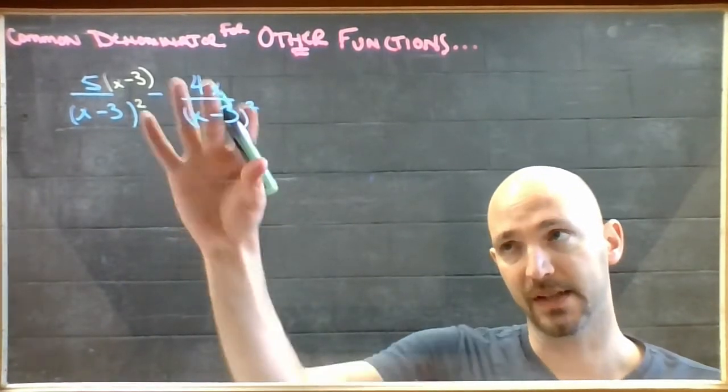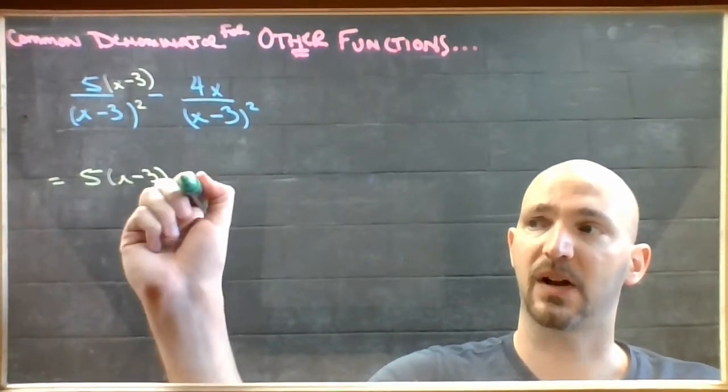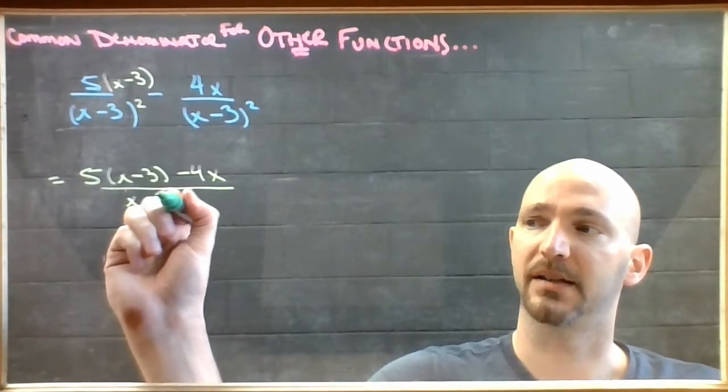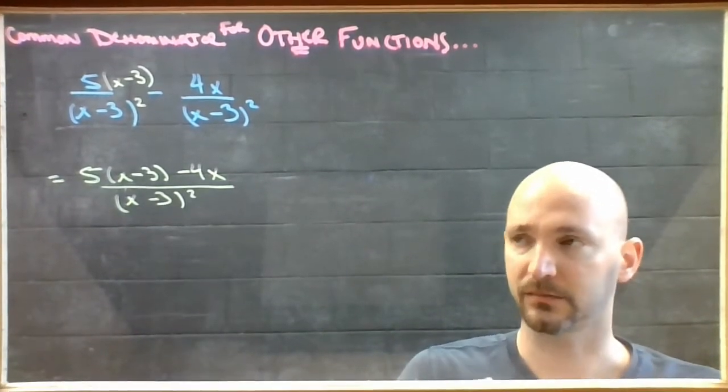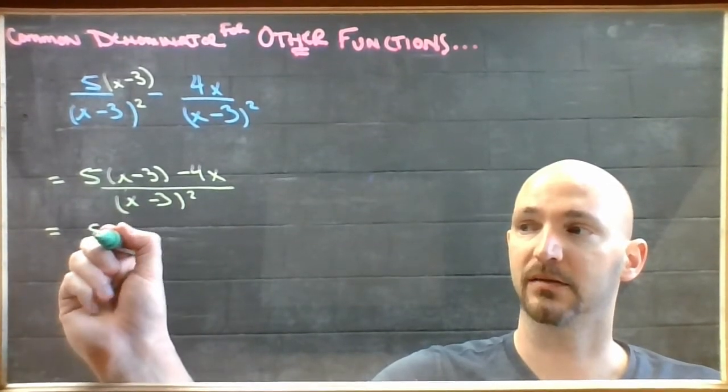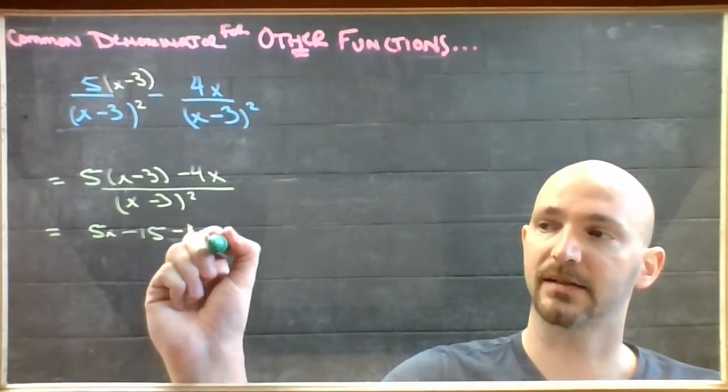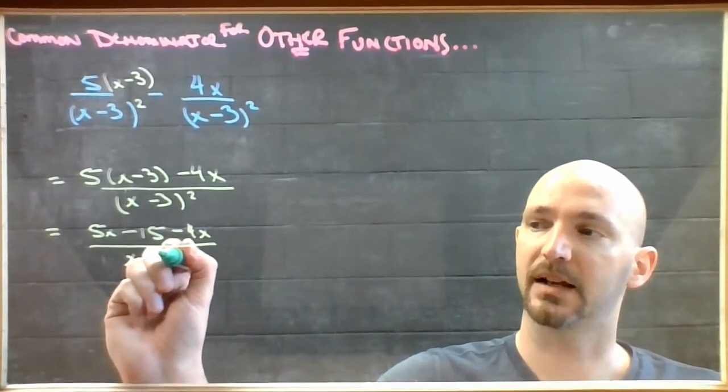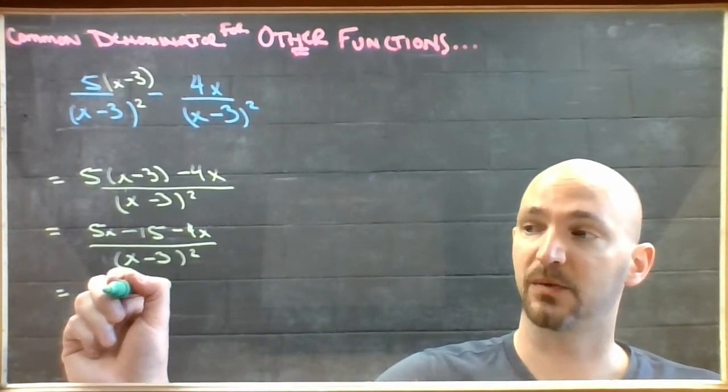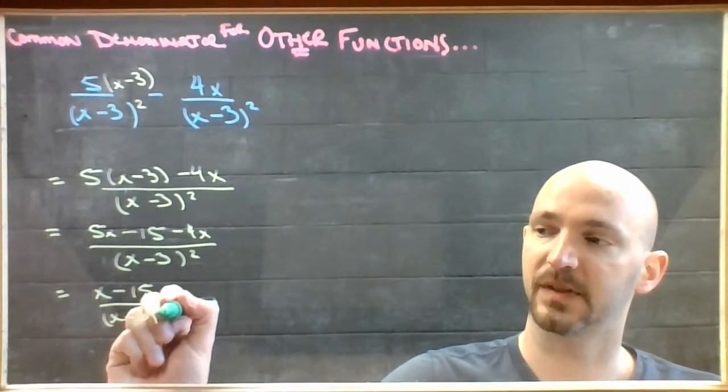So this thing, this expression, would look like 5 times x minus 3, subtract 4x over x minus 3 squared. If I do some expanding, 5x, 5 times negative 3 is negative 15, subtract 4x over x minus 3 squared. 5x minus 4x over x minus 3 squared.